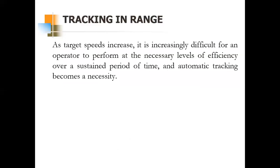In tracking in range, in the earlier days of radar, tracking of a target in range was done manually by an operator who used to watch a scope — a scope is the display of the radar. He was positioning a hand wheel to maintain a marker on the display over the desired target point. The setting of this hand wheel was the measure of the target range, which was converted to an electrical signal and applied to the processing part of the receiver.